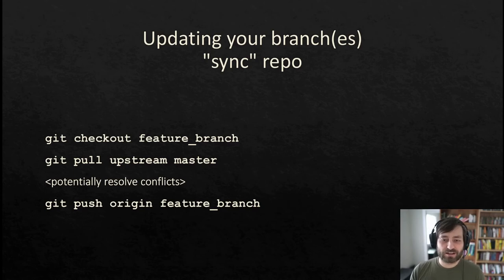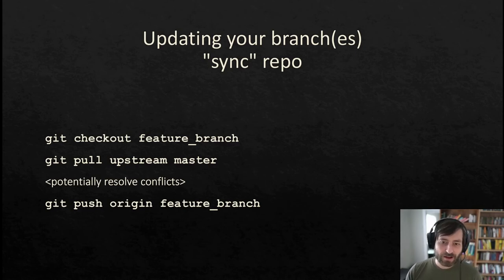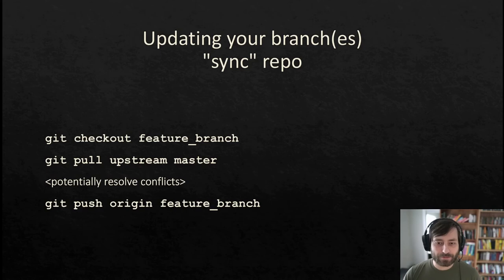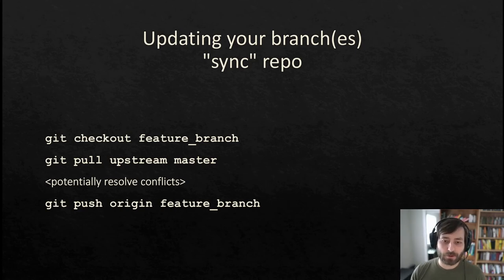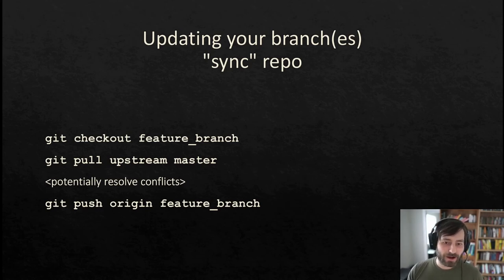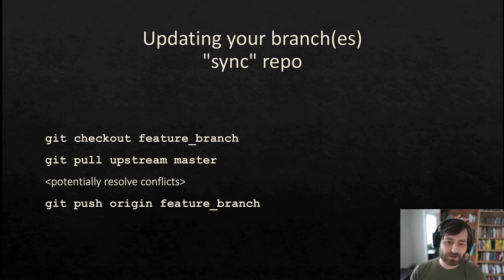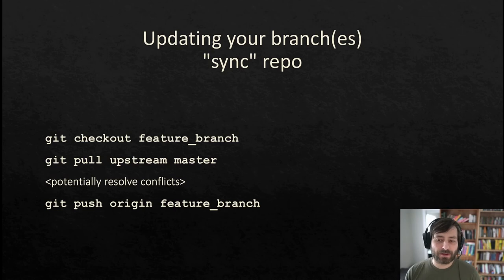Make sure that you currently have your feature branch checked out with 'git checkout feature_branch', where feature_branch is the name of your branch. Then, assuming you have the main repository added as your remote called upstream, you can do 'git pull upstream master' to fetch and merge with the upstream master branch. If there are any conflicts, you need to resolve them now. Then, once the merge is complete, you can push your feature branch to your fork — the origin remote — with 'git push origin feature_branch'. If you have a pull request based on your feature branch, the pull request will be updated automatically.